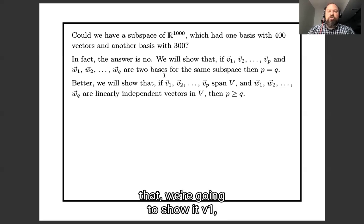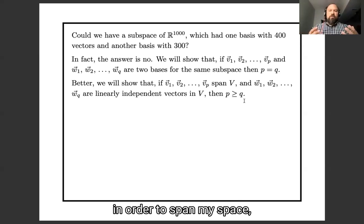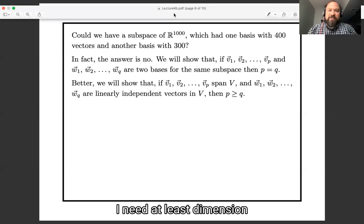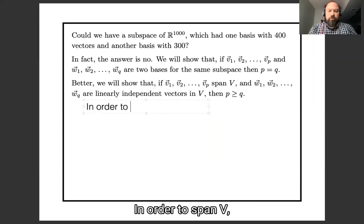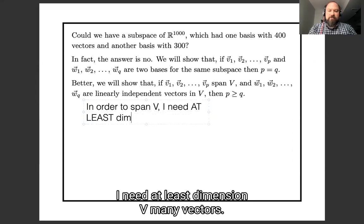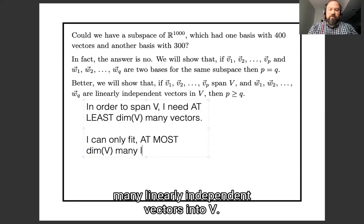And actually, we're going to show a little bit better than that. We're going to show that if v1 through vp span and w1 through wq are linearly independent, then p is less or equal to q. So what you should think about is, in order to span my space, I need at least dimension many vectors. Let me write that out for you. In order to span V, I need at least dimension V many vectors.